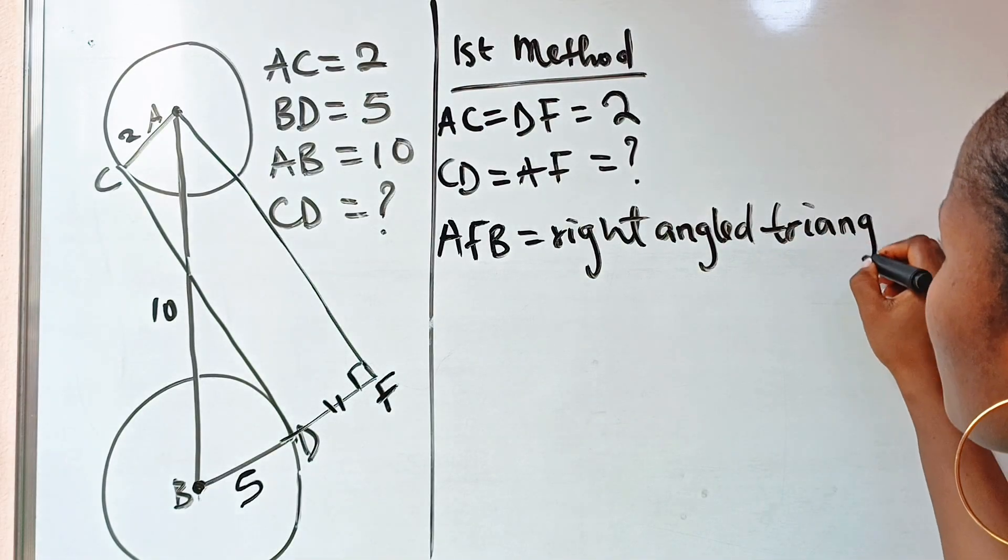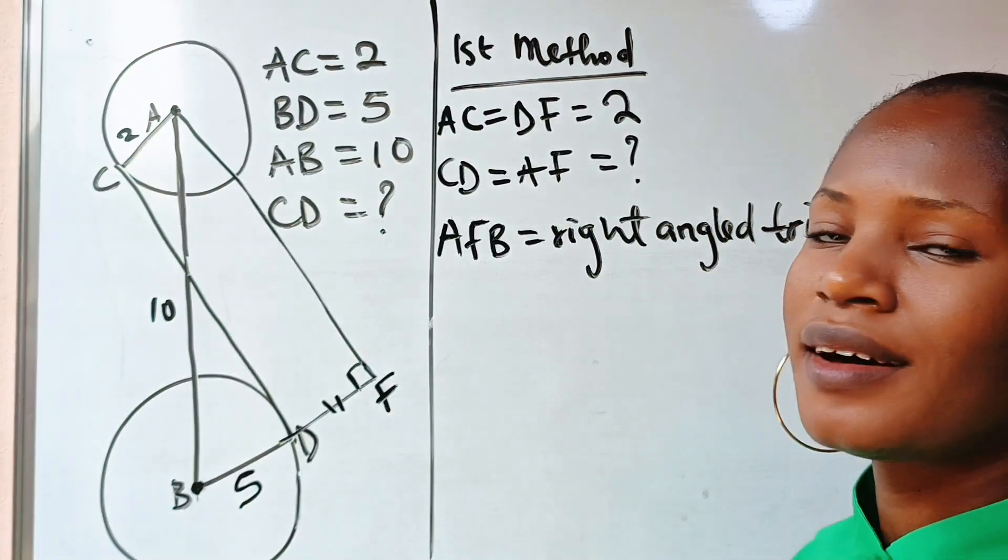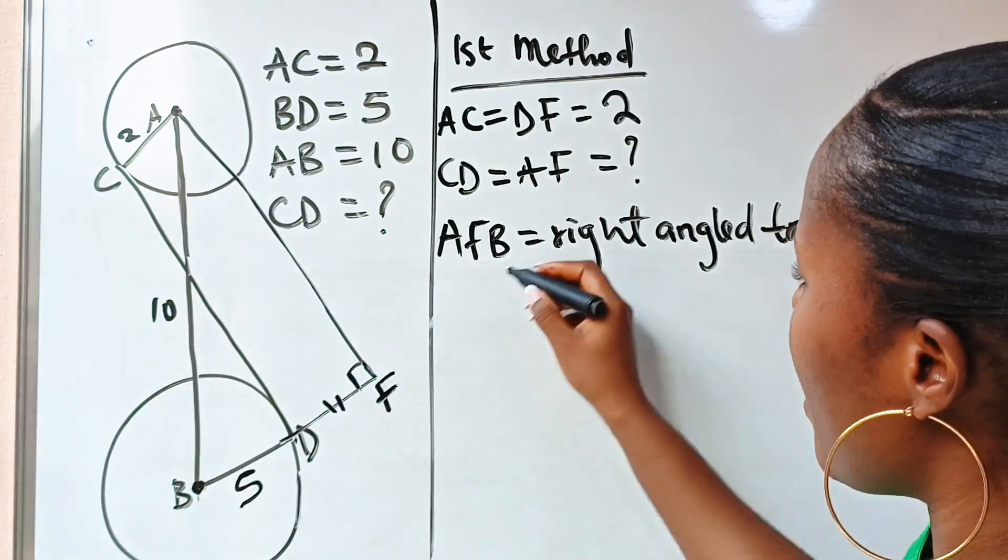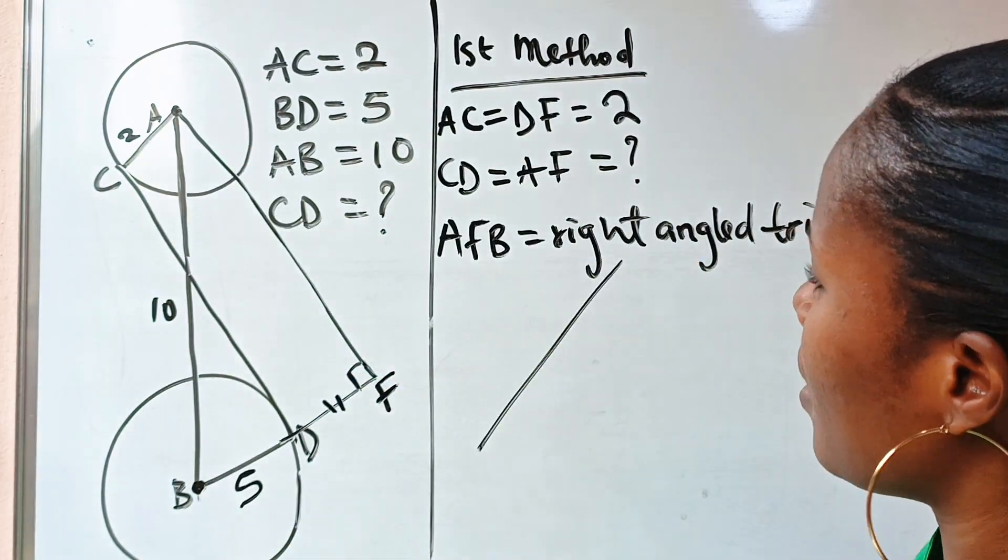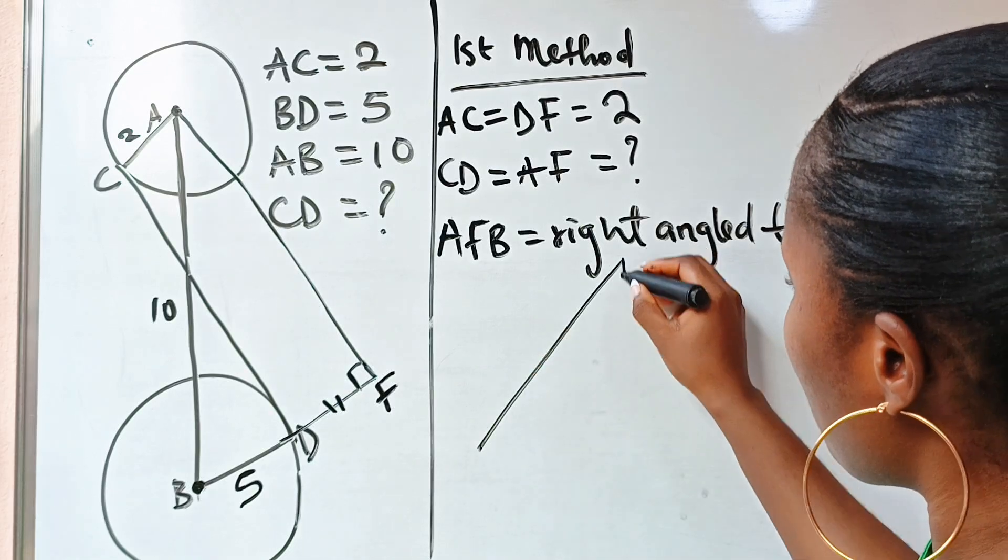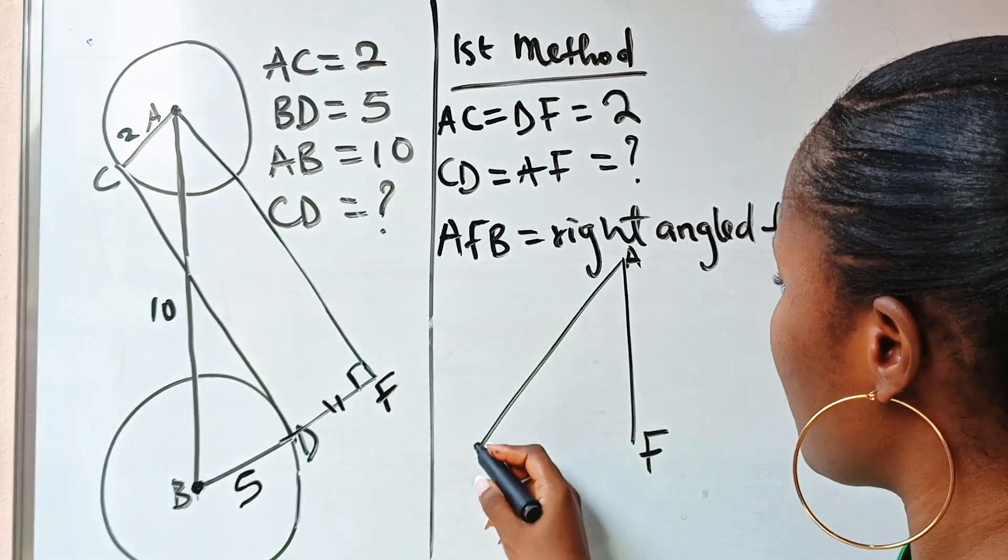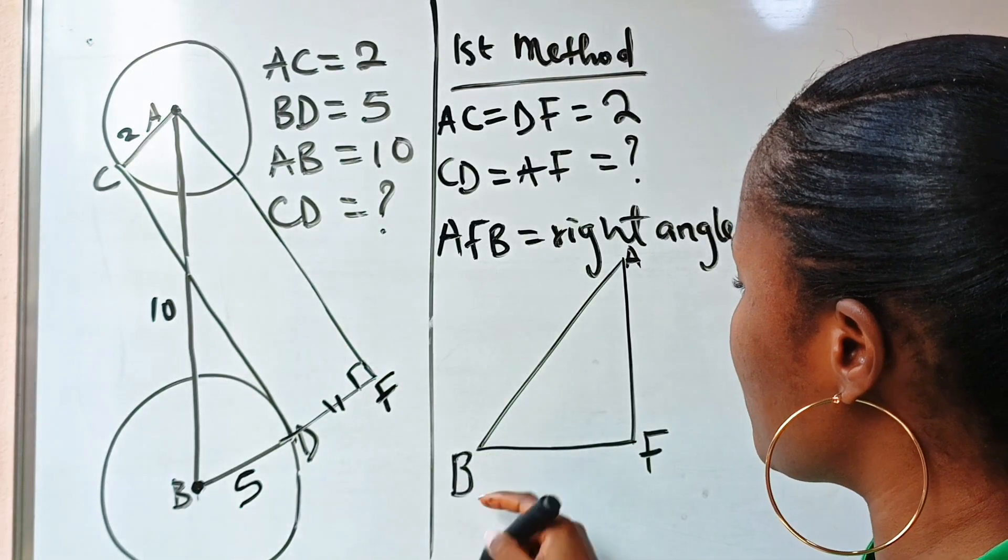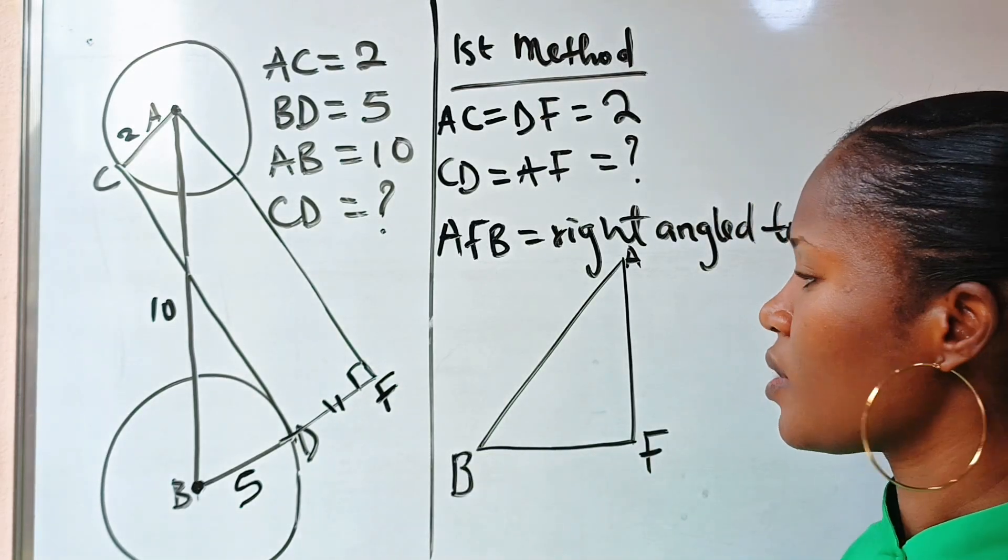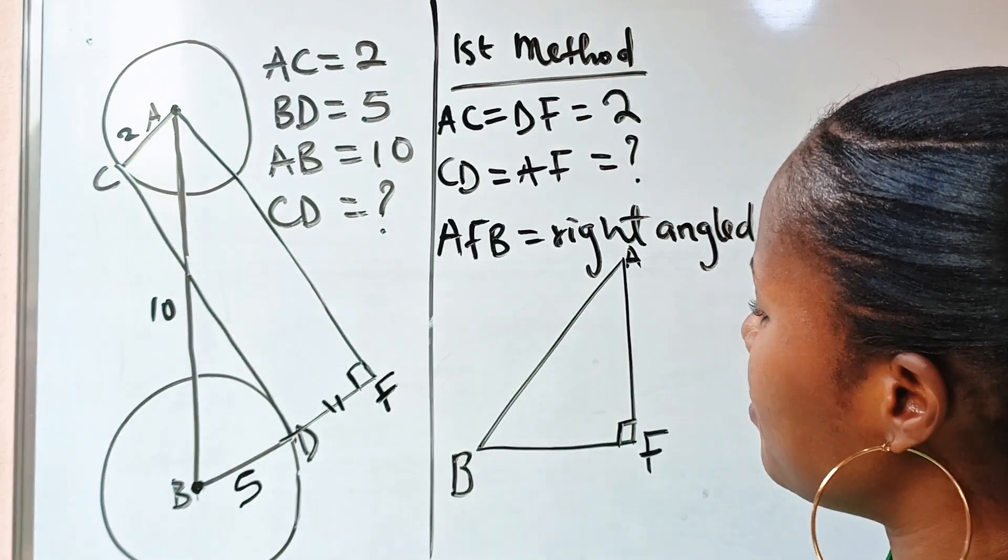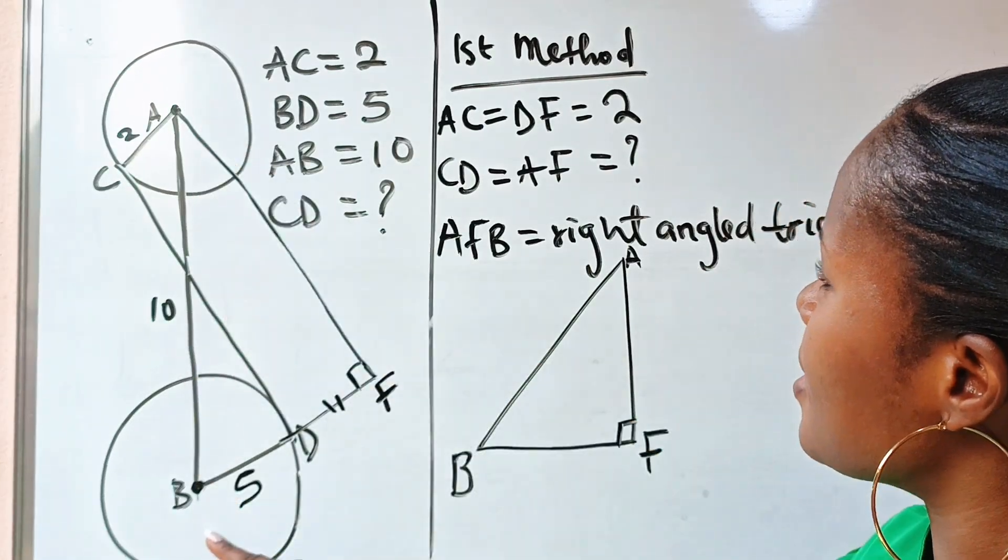Triangle. Now shall we draw that out? So this is my AB. This is A, this is F, this is B. So we have BF. This is right angle, and AB is 10, right?